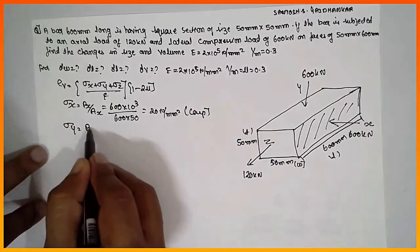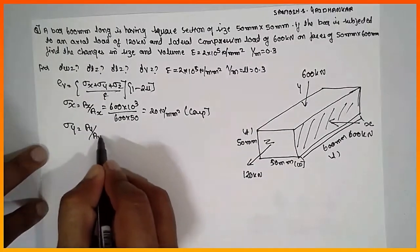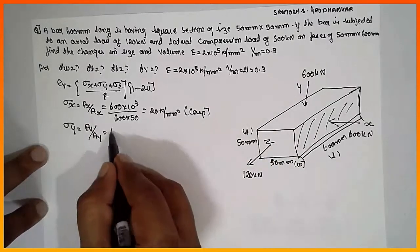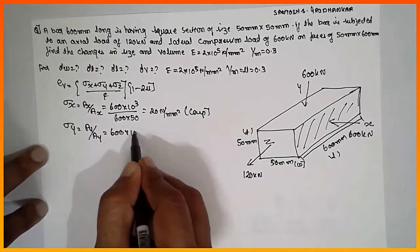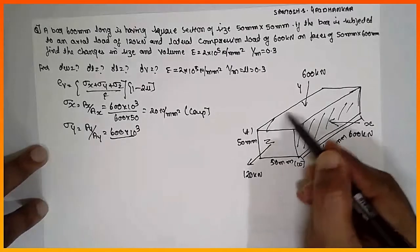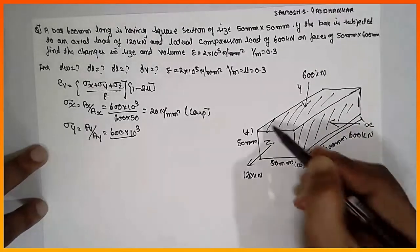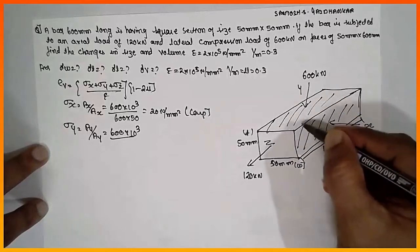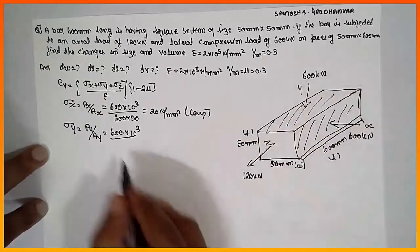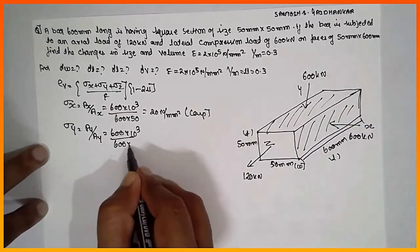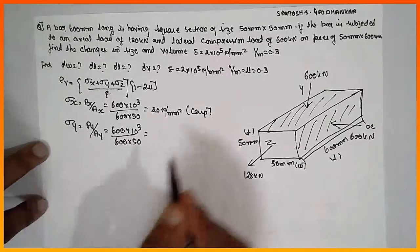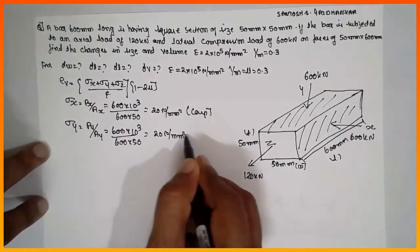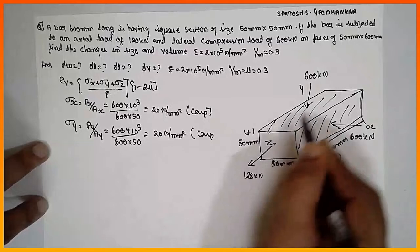σy = Py / Ay. Py = 600×10³ N. The area is 600 mm × 50 mm = 600×50. So σy = 600×10³ / (600×50) = 20 N/mm². It is also compressive in nature, so σy = −20 N/mm².